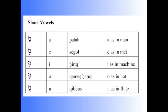The Patah is an A vowel written as a line underneath the consonant, pronounced as an A as in the word 'man.' The Segol, a combination of three dots, is pronounced as an E as in 'met.' The Hireq, or the I vowel, is pronounced E as in 'machine.' The Qamats Qatan is an O vowel, the O as in 'hot,' kind of an O sound.